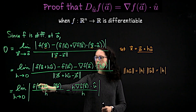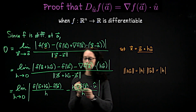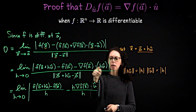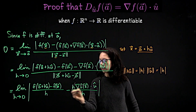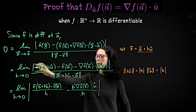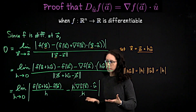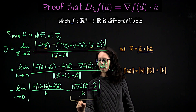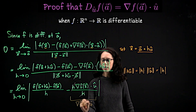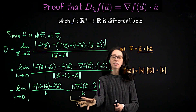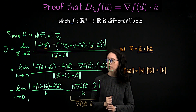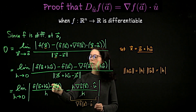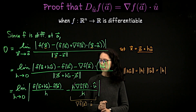After canceling, the second term has no more dependence on h — it's just the gradient of f at a dot u, a scalar number that has nothing to do with the limit. The first term, as h goes to zero, is exactly the definition of the directional derivative of f at a in the direction of u: we started at a, took a small step in the direction of u, and divided by the size of the step h. So this expression goes to the directional derivative of f at a in the direction of u.